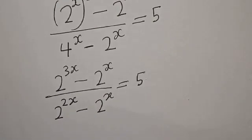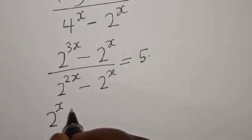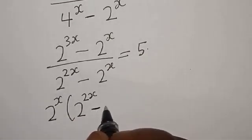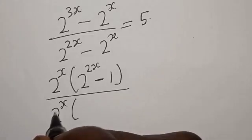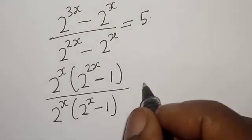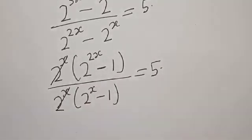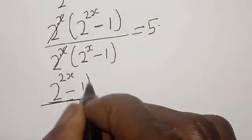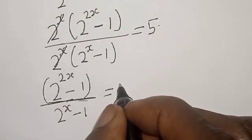From the numerator, if we factor 2 raised to the power x out, we have 2 raised to the power x multiplied by 2 raised to the power 2x minus 1. In the denominator, we have 2 raised to the power x multiplied by 2 raised to the power x minus 1. We cancel the common factor of 2 raised to the power x, and we are left with 2 raised to the power 2x minus 1, divided by 2 raised to the power x minus 1, equal to 5.